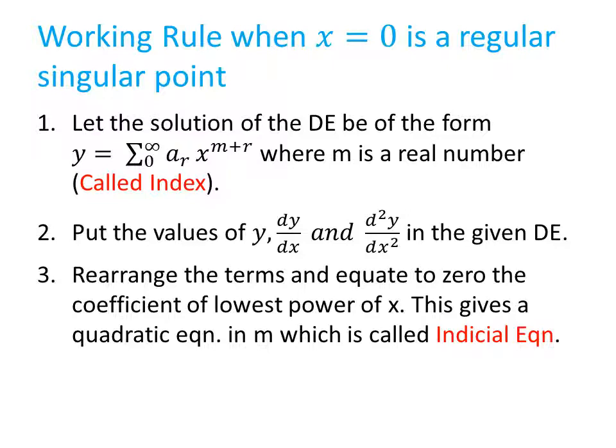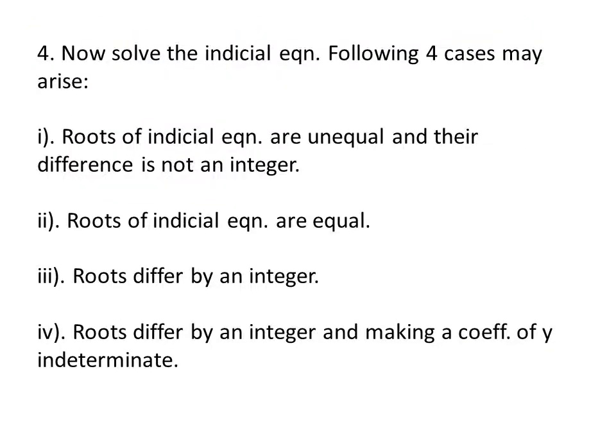First of all we will discuss the working rule when x equal to 0 is a regular singular point. Let the solution of the differential equation be of the form y equal to sigma a_r x to the power m plus r. Here m is a real number and it is called the index. Put the values of y, dy/dx, and d²y/dx² in the given differential equation. Rearrange all the terms and equate to 0 the coefficient of the lowest power of x. It will give you a quadratic equation in m — this is called the indicial equation. Solve the indicial equation and get two values of m. According to the values of m, the following four cases may arise.